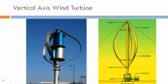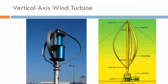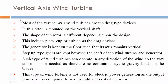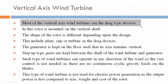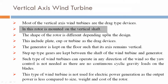This is the pictorial view of a vertical axis wind turbine. Most vertical axis wind turbines are drag-type devices. In this design, the rotor is mounted on the vertical shaft.